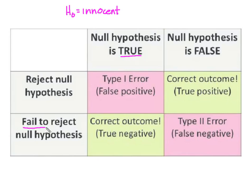we do not want to reject H0. The correct outcome and the true negative is that we will not reject H0 because H0 is true.